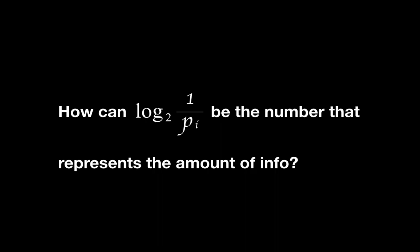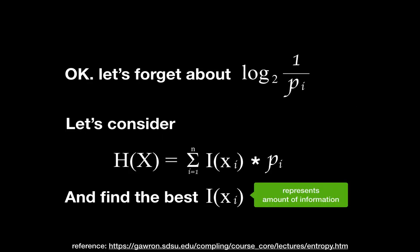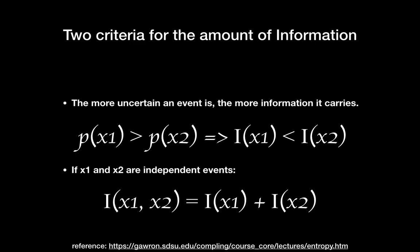And why? How can the log 1 over p_i be the number that represents the amount of info? Okay, let's take a step back and just forget about the log 1 over p_i. But, we know the Shannon entropy is an expected value. Here, I(x) is the function providing the amount of info.